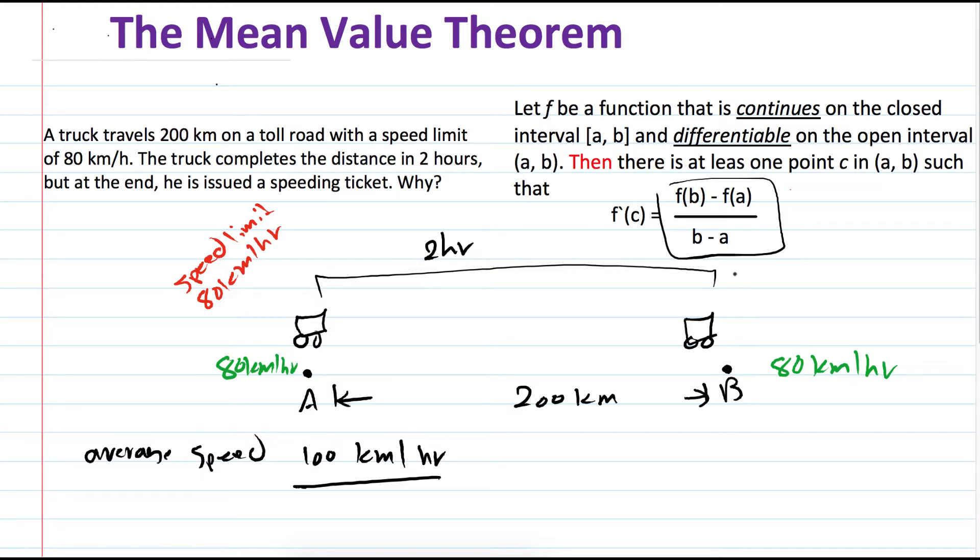We have a car that travels 200 kilometers on a toll road, and his travel is continuous. There is no breakage in it, and his speed changes, so it is differentiable. He makes the travel in two hours, but at the end, he's issued a ticket. Since the speed limit is 80 kilometers per hour and his average speed has been 100 kilometers per hour, then by the mean value theorem, at one point in his driving from A to B, his speed has been 100 kilometers per hour, and that exceeds the speed limit.